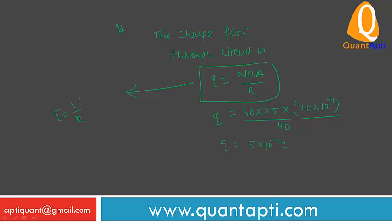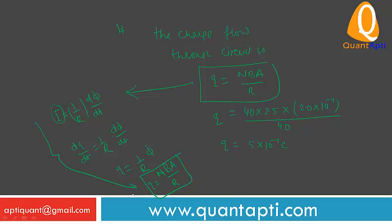You know how this is done. We know that i is equal to 1 upon R d phi by dt. Now what is the value of i? i is equal to dq by dt is equal to 1 upon R d phi by dt. dt cancels with dt, Q is equal to 1 upon R phi. Phi is B dot A upon R. And if number of turns is N, then NBA upon R - this is how.